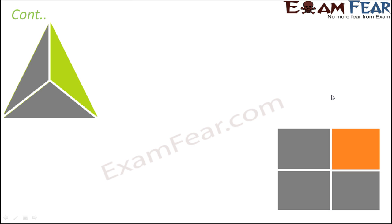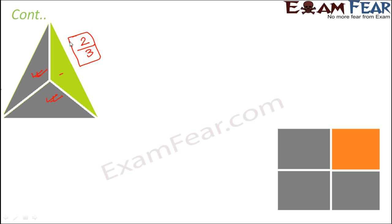Now let's look at similar figures in a slightly different way, where the shaded portion has changed. Here the triangle is again divided into three equal parts, but now two parts out of three are shaded, so two thirds of the triangle is shaded.